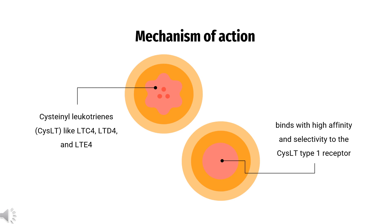Zileuton relieves such symptoms through its selective inhibition of 5-lipoxygenase, the enzyme that catalyzes the formation of leukotrienes from arachidonic acid. Specifically, it inhibits leukotriene LTB4, LTC4, LTD4, and LTE4 formation. Both the R(+) and S(-) enantiomers are pharmacologically active as 5-lipoxygenase inhibitors in in vitro systems.